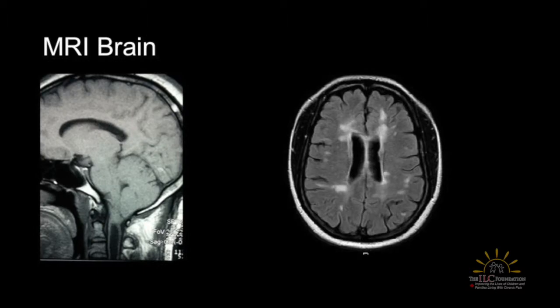An MRI of the brain is performed both to confirm suspected problems and to exclude other issues. This individual had a small posterior fossa — the cerebellar tonsils project below the foramen magnum — and he also had fluid within his spinal cord, called a syrinx. Another person, while she had weakness and fatigue, had these small white spots; she had multiple sclerosis, which is probably an immune or reactive condition that attacks the coverings of the nerves, ultimately causing failure of the nervous system.